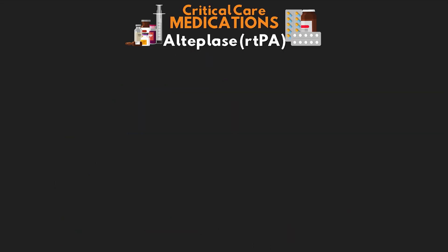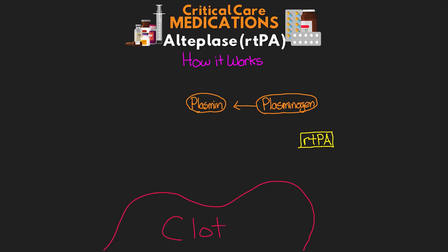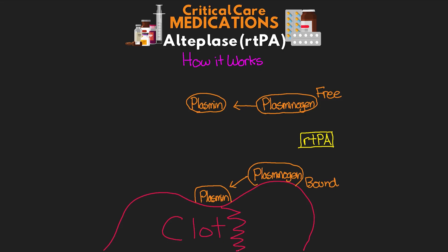To understand how alteplase works, we need to look at the clotting process and specifically the lysis of a clot. The tissue plasminogen activator — both natural and our synthetic rTPA — catalyzes the conversion of plasminogen to plasmin. This plasminogen can be found either bound to the clot or floating freely in systemic circulation. Once we have plasmin, it works to break down many blood plasma proteins, and specifically it breaks the crosslinks between fibrin molecules. These crosslinks provide structure to the blood clot, so breaking them down leads to clot breakdown.